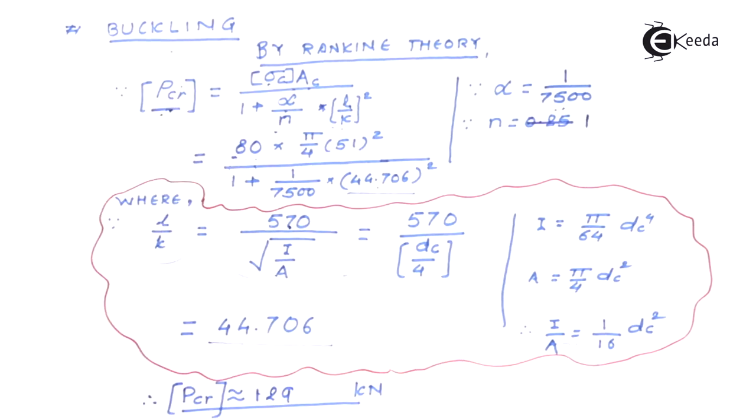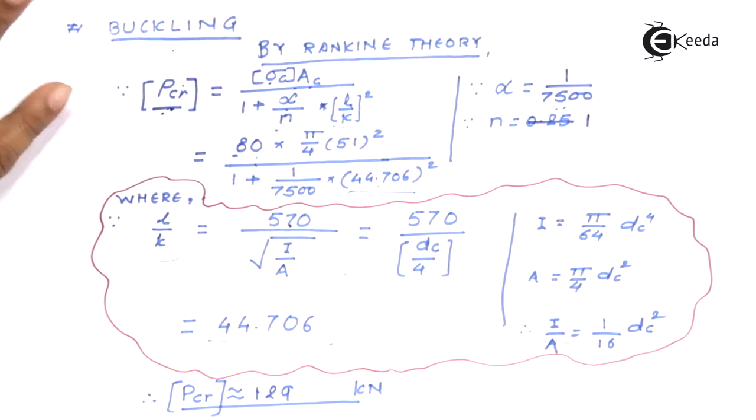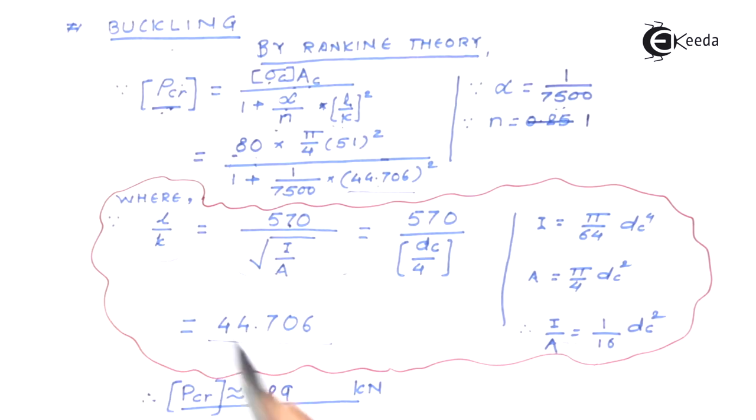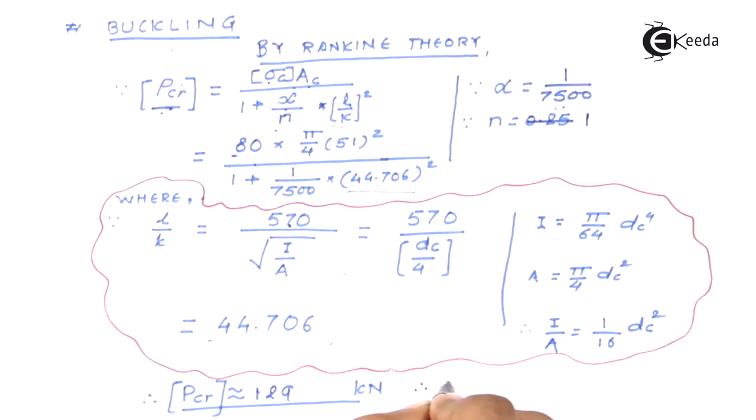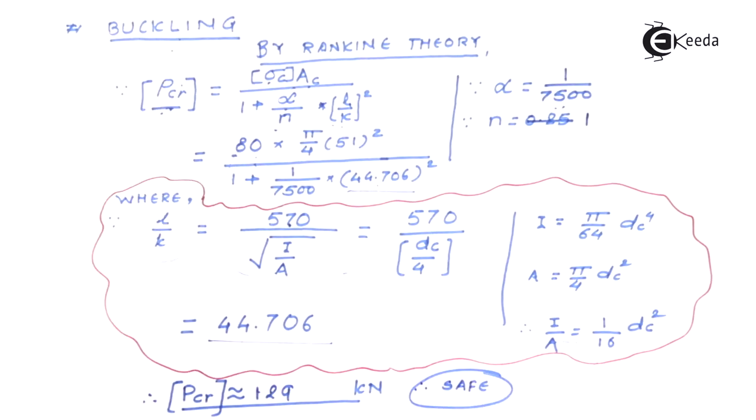The same value I've replaced here and after solving this I'll get critical load which is allowed somewhere equal to 129 kilo newton. If you remember the load that we have been given is 100 kilo newton. That means the critical load that this particular power screw can sustain is more than the applied value and hence we can say that the screw is safe in buckling.